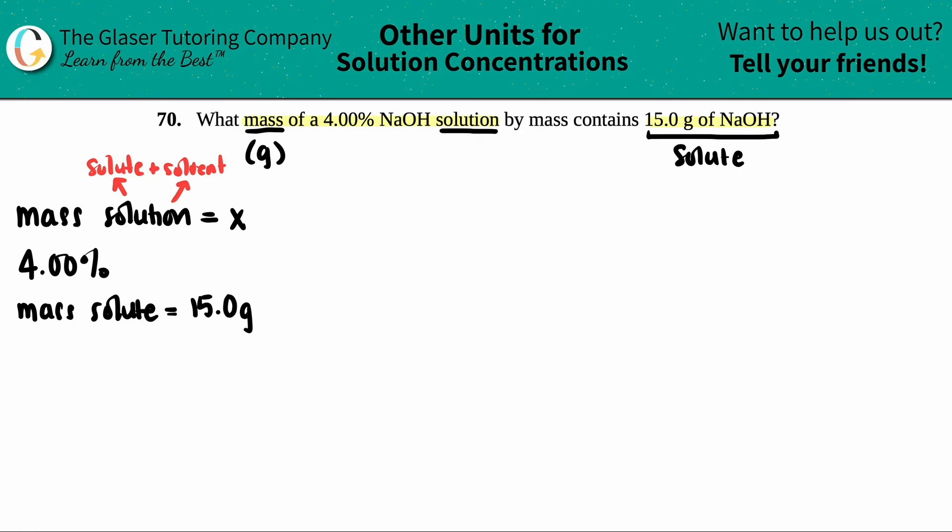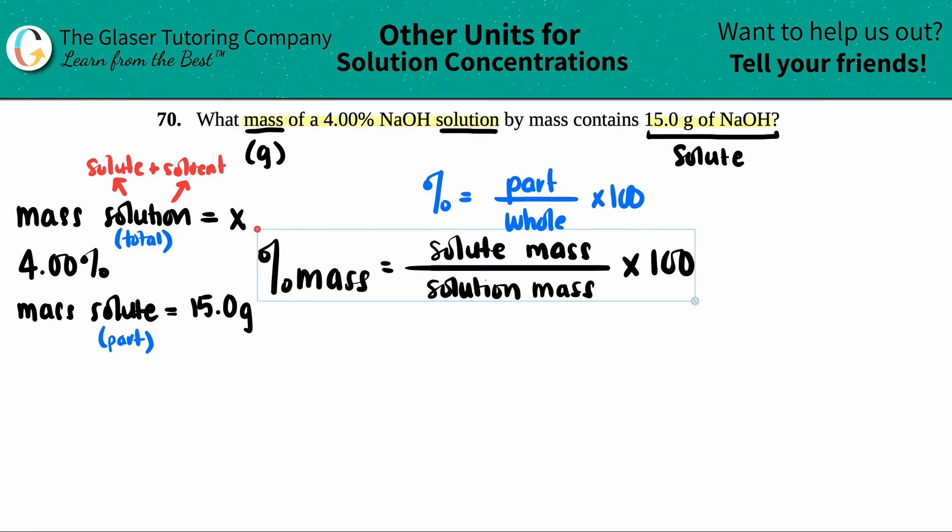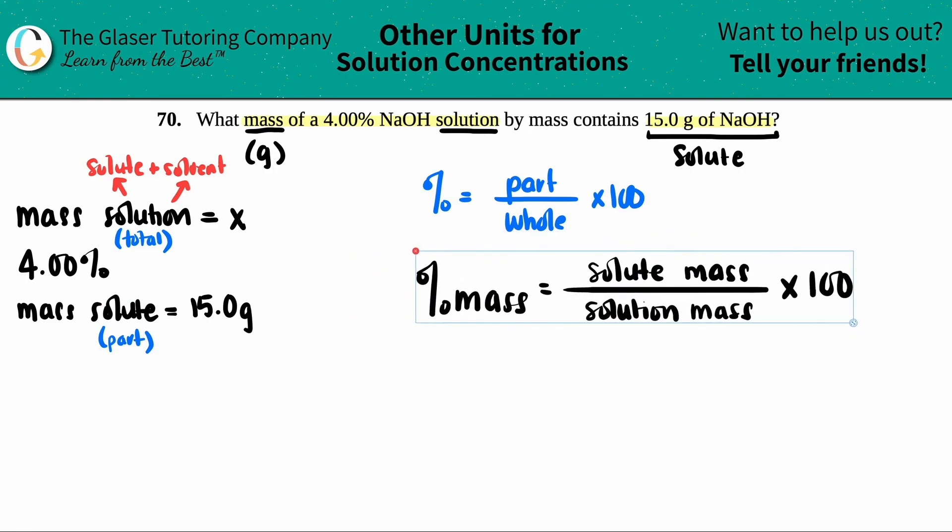But a solution, just like we said, we can think of this as a total, and the solute is just part of the entire solution. And they gave me a percentage. Any percentage in general is just basically part divided by whole times 100. Part divided by whole times 100. This now, specifically for this specific formula, it's this one over here. Do you see how it's basically the same though?